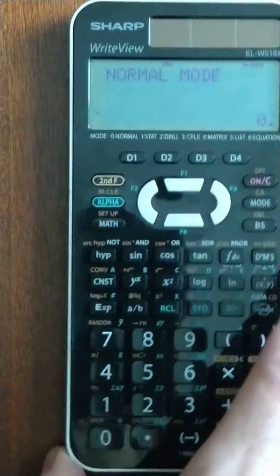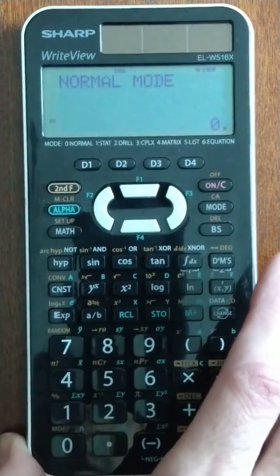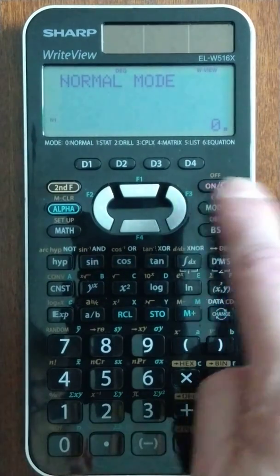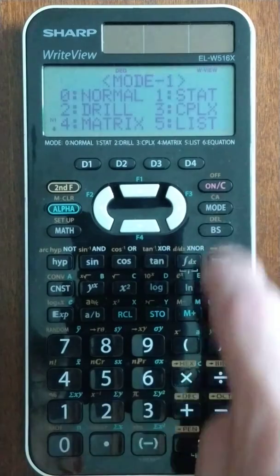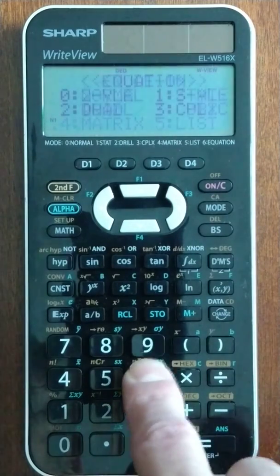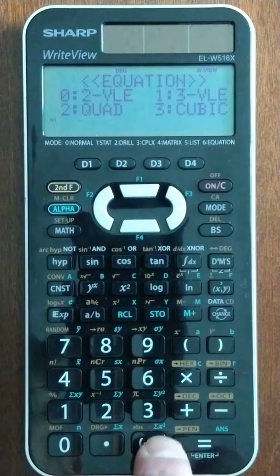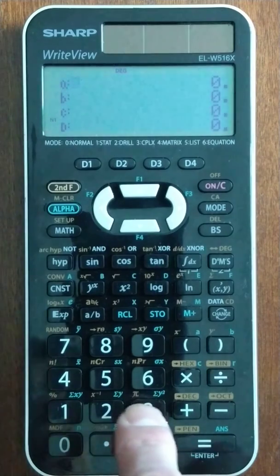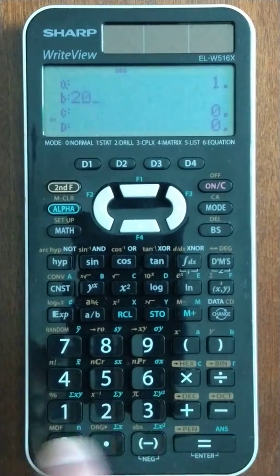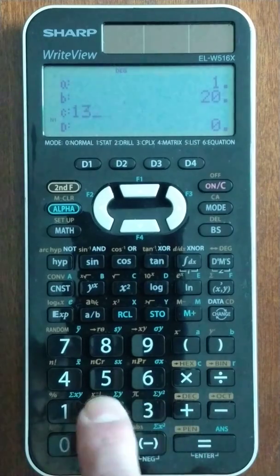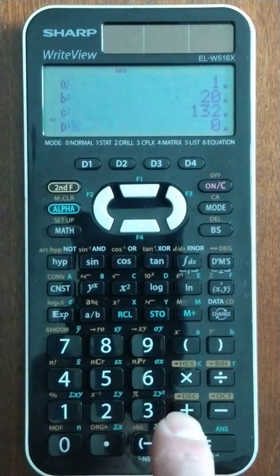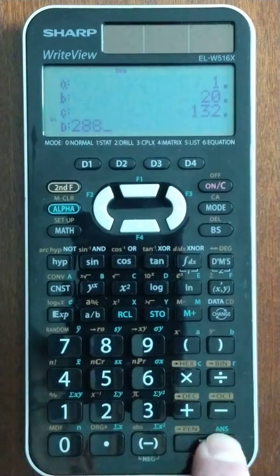I haven't done this on the Sharp, or I haven't done it ahead of time, so I'm not sure what it will do. So let's do this one here. We go into mode, 6 is the equation, we're doing a cubic, so I hit 3, and we have 1 x cubed, 20 x squared, 132 x, and 288 for a constant.